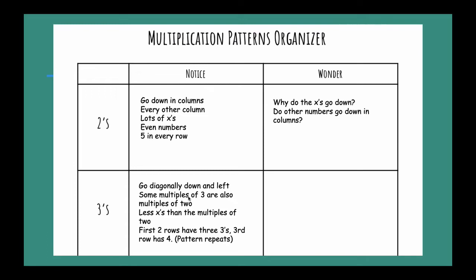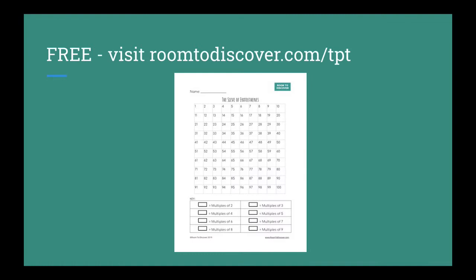And then for our threes, they go down diagonally down and left. Some multiples of three are also multiples of two. They might wonder why they go diagonally. Are all the multiples of three odd? This is one that a lot of students think: it's a multiple of three, it's odd. But when we start filling this chart in, we see those things.